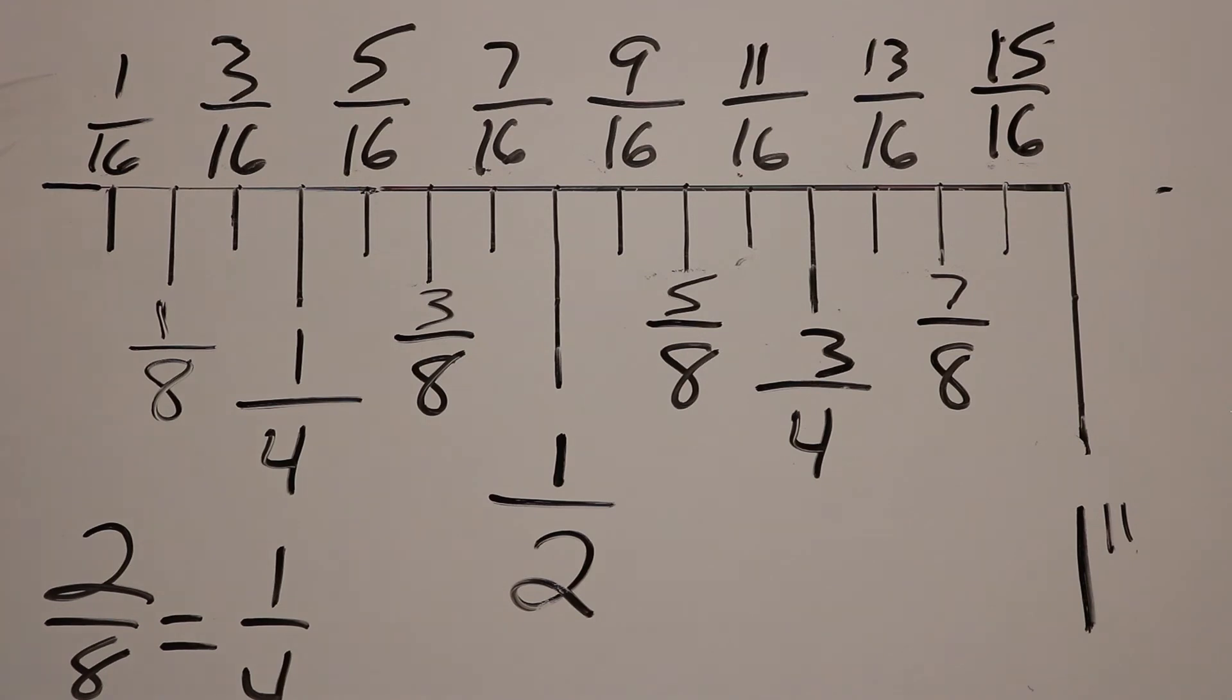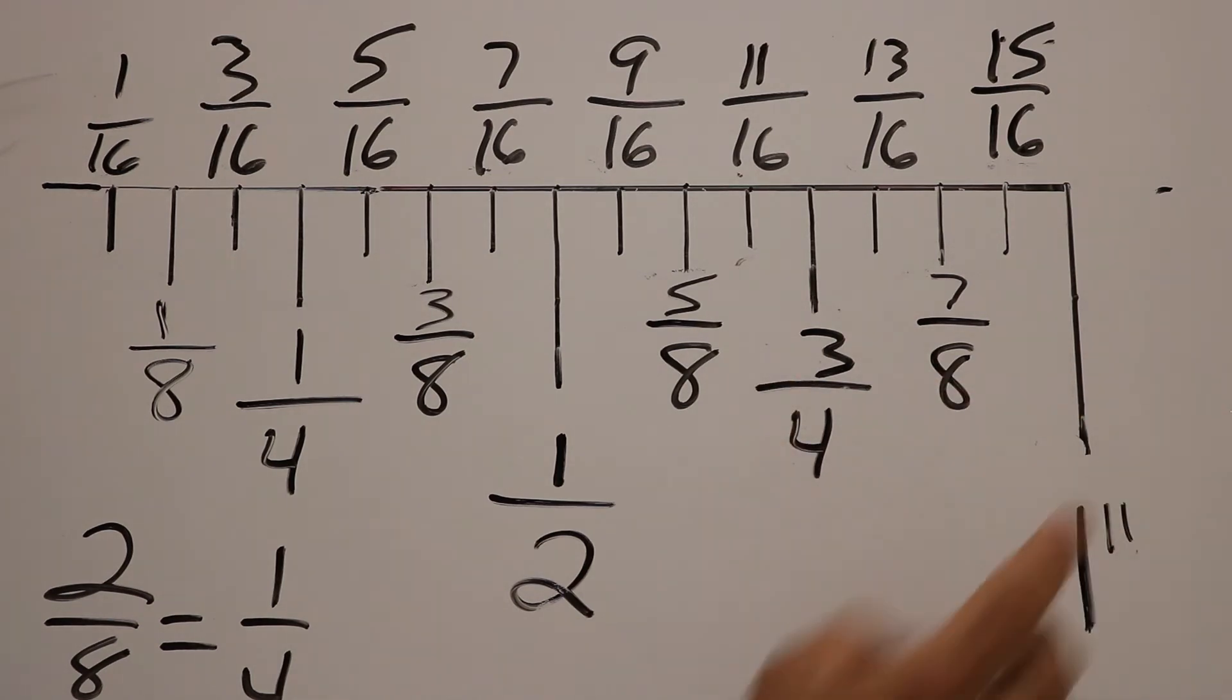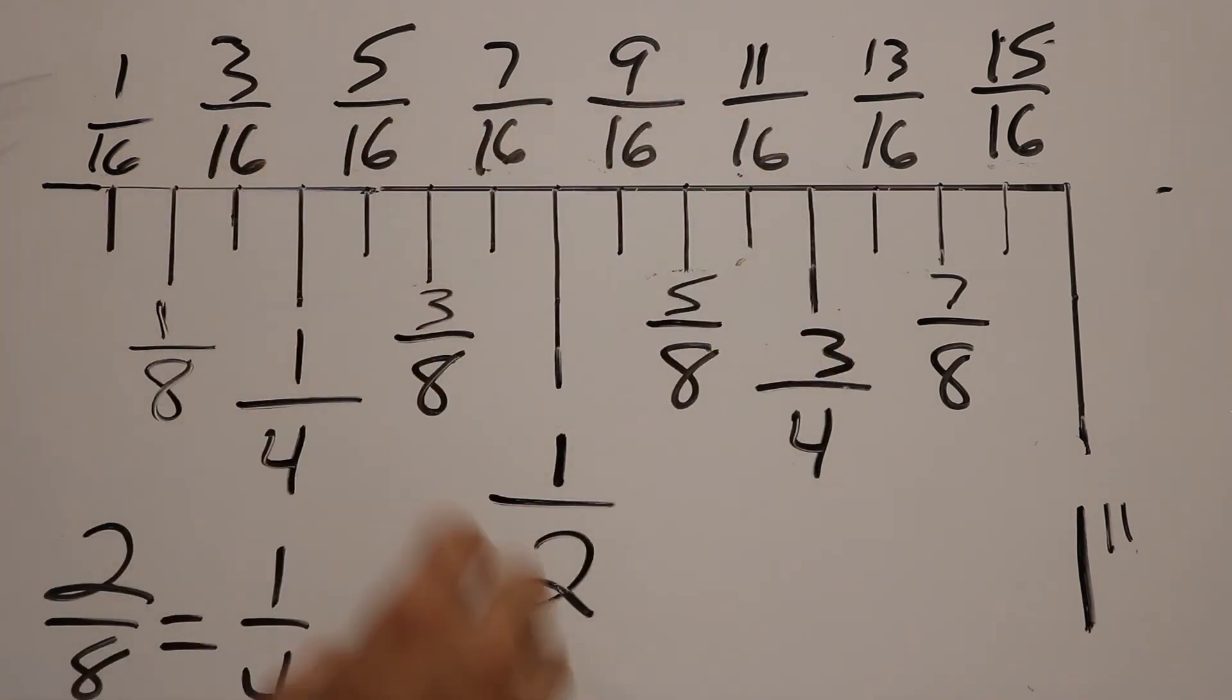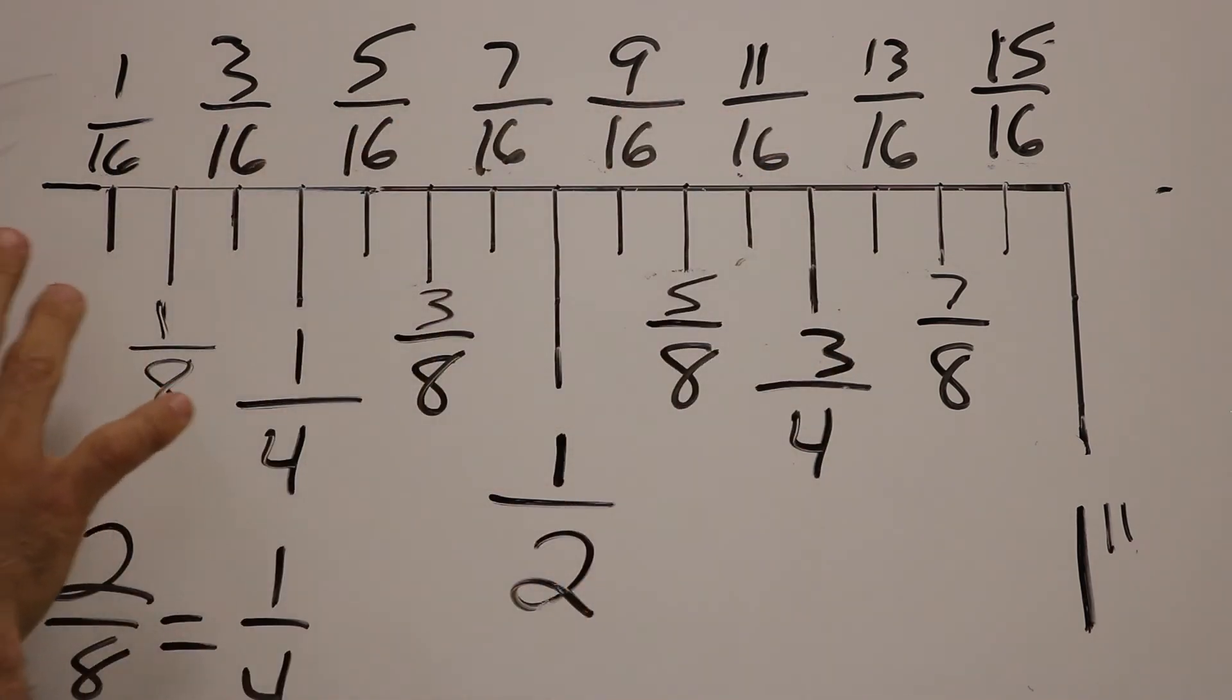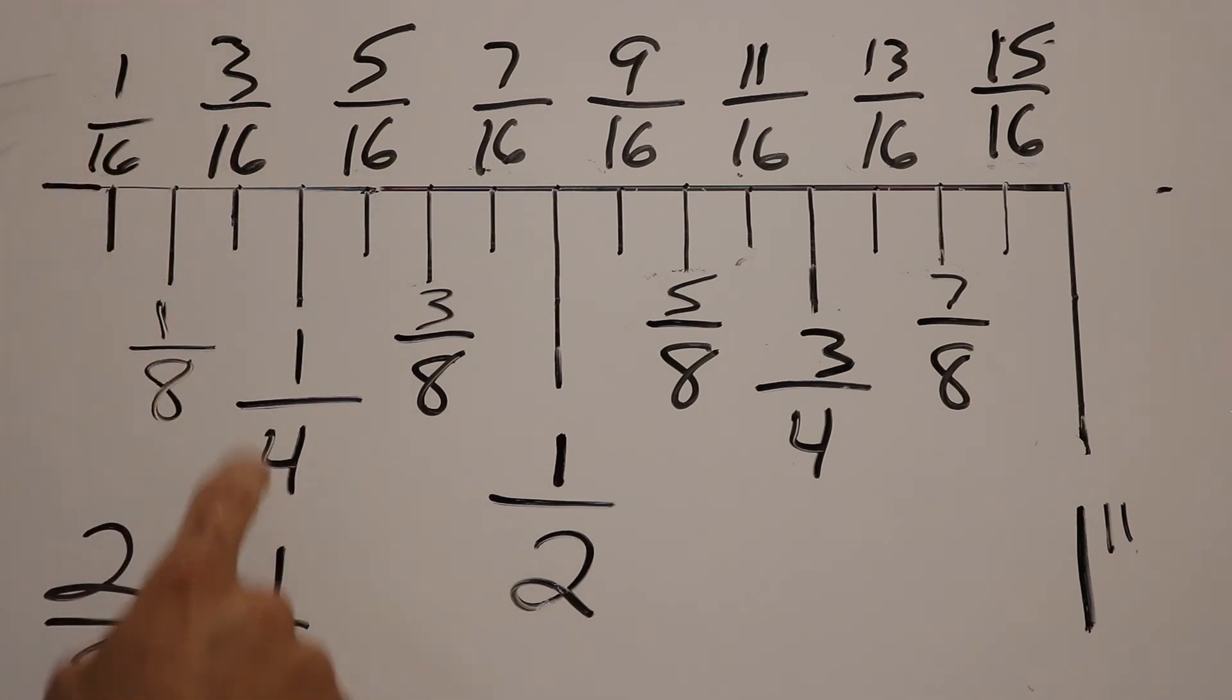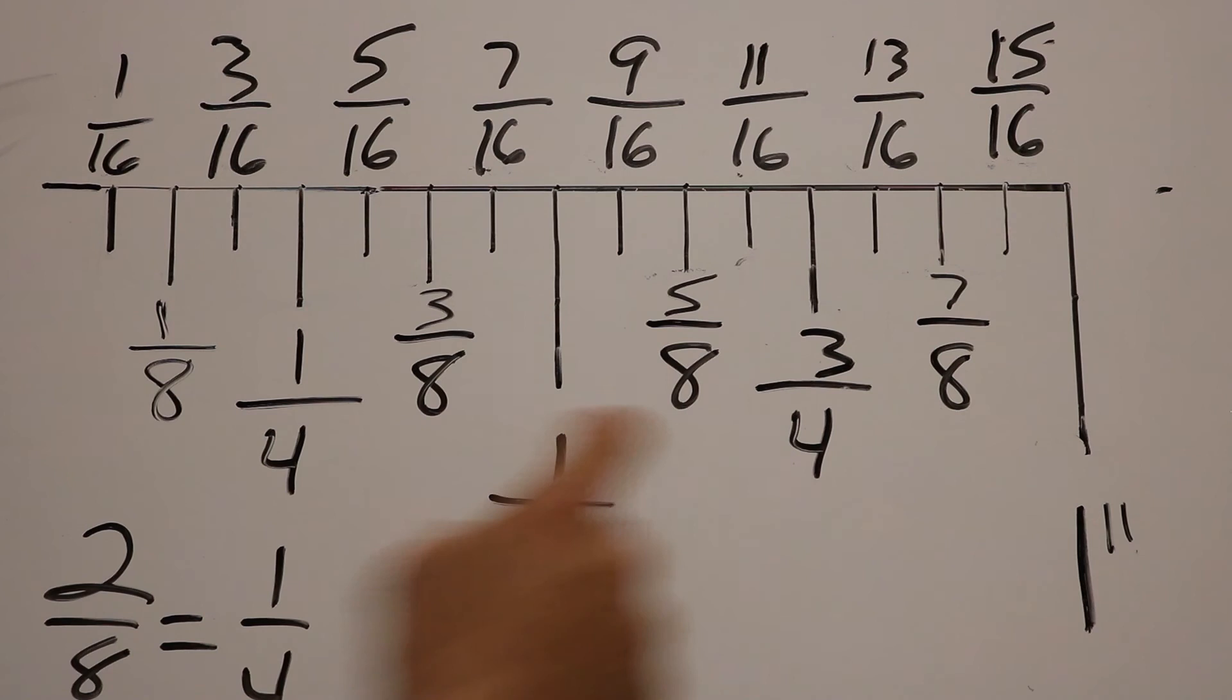So, pretty much what I did is I used the line lengths to determine what increment it is. So I have one inch, that's my longest line length, that's a whole inch right there. I go to my next longest line and I see it breaks it into two equal halves, so that's one half. I go to my next line length, I can see that it breaks it into four parts and that's why we have one quarter and three quarters.